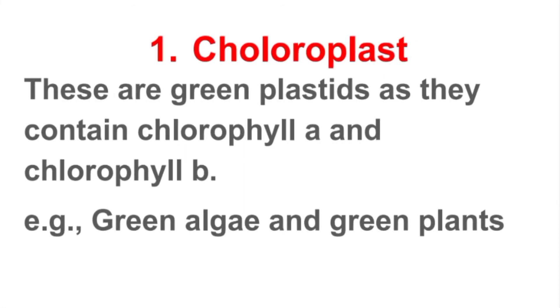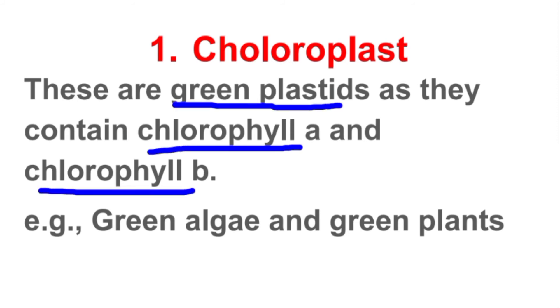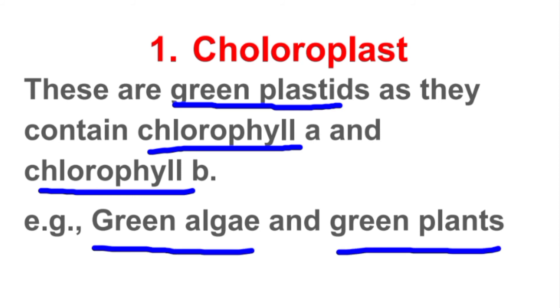Types of Plastids. There are three types of plastids. The first type is chloroplasts. Chloroplasts are green coloured plastids because they contain chlorophyll A and chlorophyll B pigments. Chloroplasts are present in green algae and green plants.